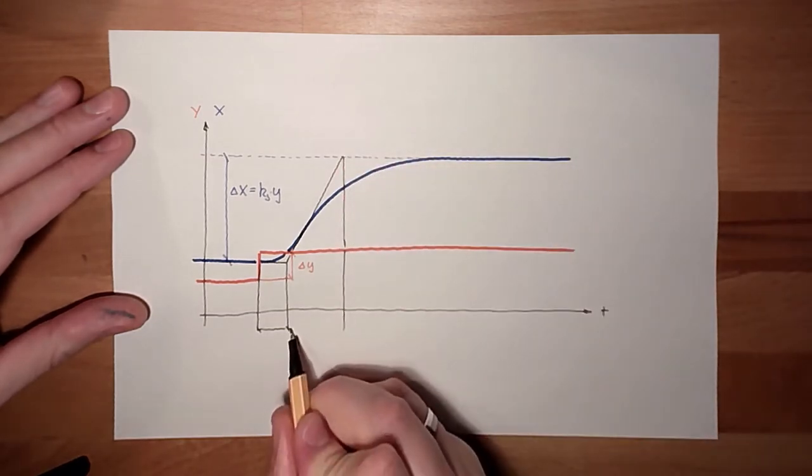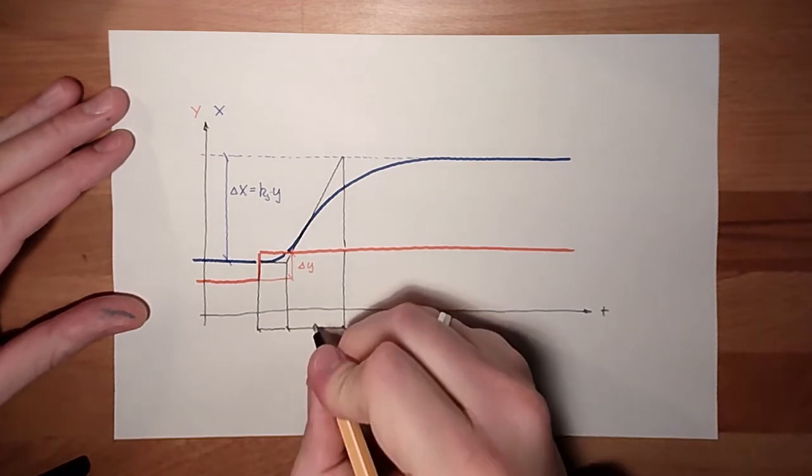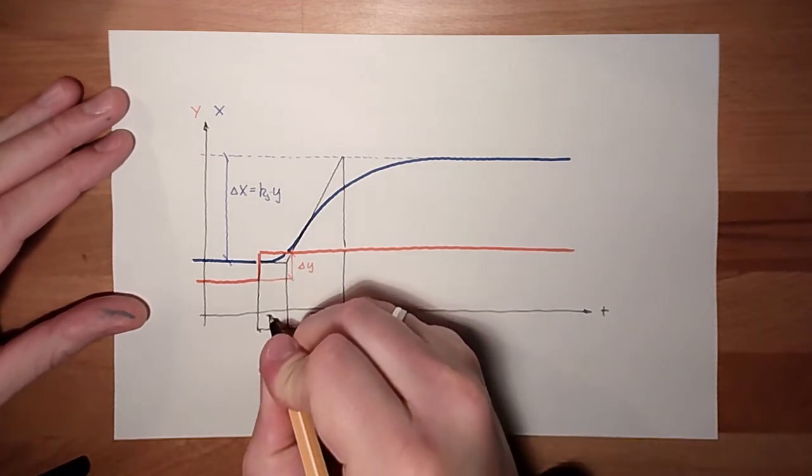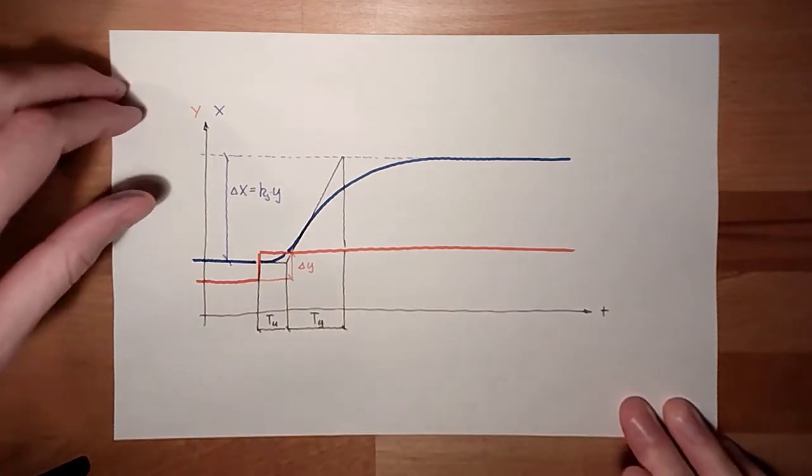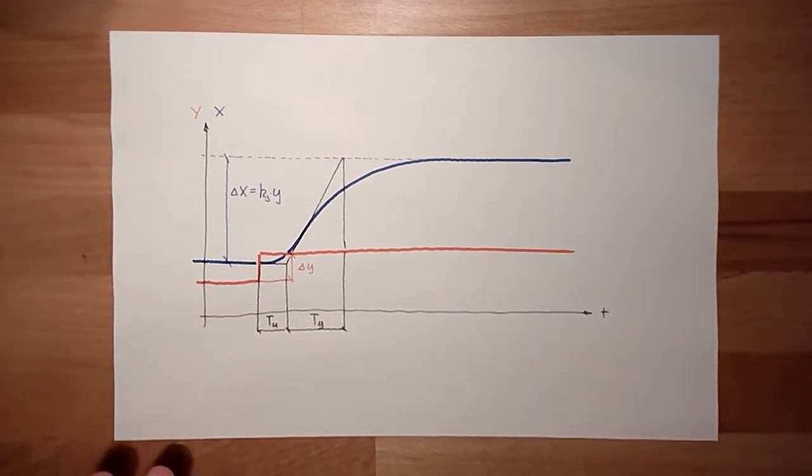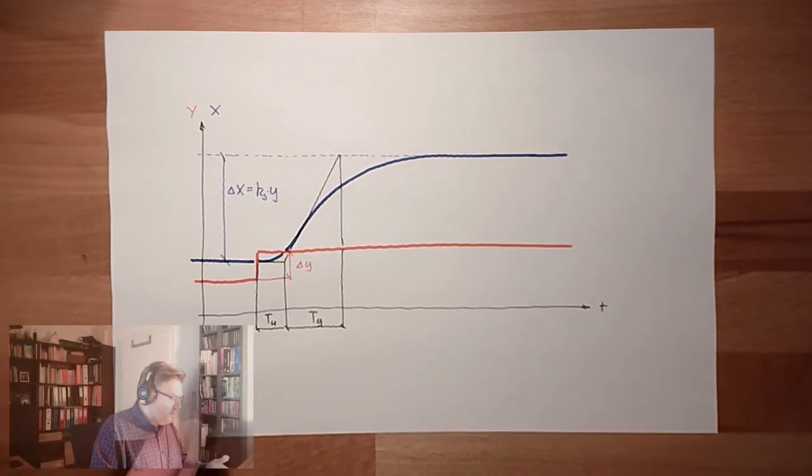And this time. This is Tg, the rise time, and this is Tu, the delay time. So actually, these are the things I can read out.